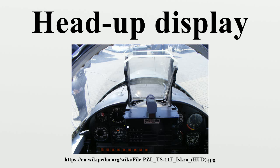Second generation systems are found on commercial aircraft. Third generation HUDs use optical waveguides to produce images directly in the combiner rather than use a projection system. Fourth generation HUDs use a scanning laser to display images and even video imagery on a clear transparent medium. Newer micro-display imaging technologies are being introduced, including liquid crystal display, liquid crystal on silicon, digital micro-mirrors, and organic light-emitting diode.